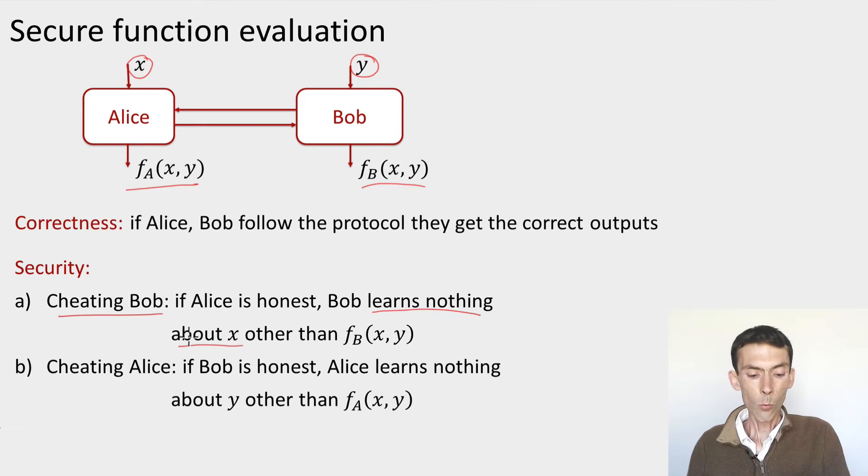other than what he would have learned by running the protocol honestly, which is, at least he must learn whatever this function FB reveals about X. If FB of X and Y would be equal to X always, this is an example we could consider, then by correctness, Bob must learn X. And in that case, we can't require of security that he wouldn't learn X. So Bob will always learn FB of X and Y, and that's the only thing he should be able to learn about Alice's input. Symmetrically, if Bob is honest, then a cheating Alice cannot learn anything about his input Y than what is already revealed by her output FA of X and Y.